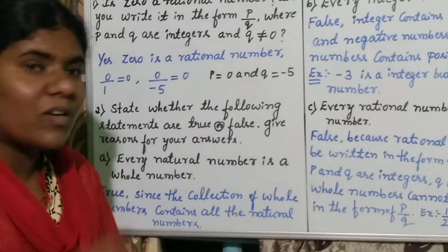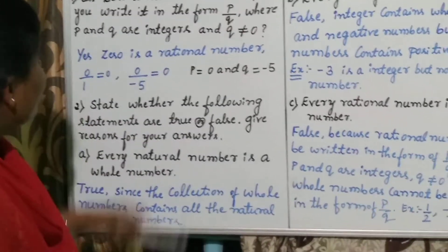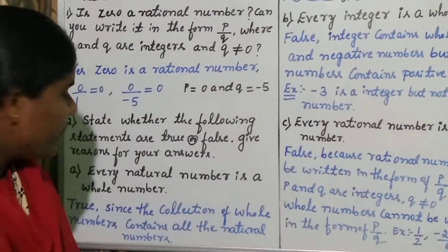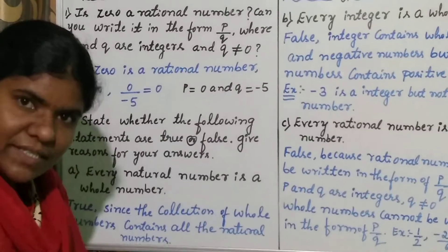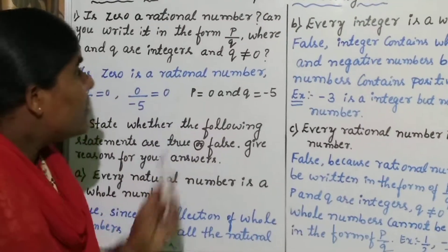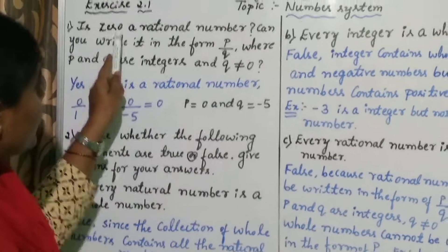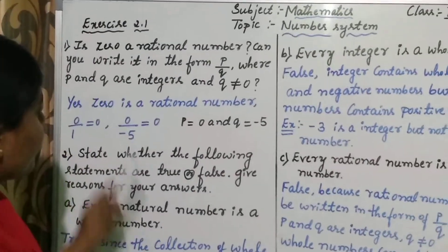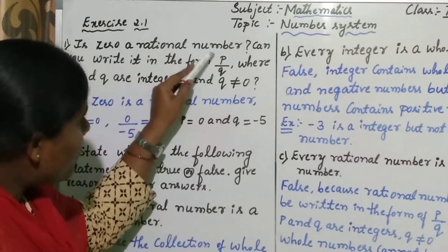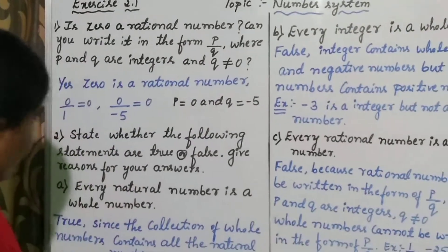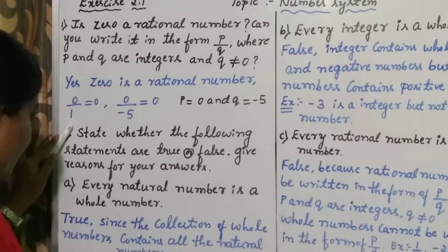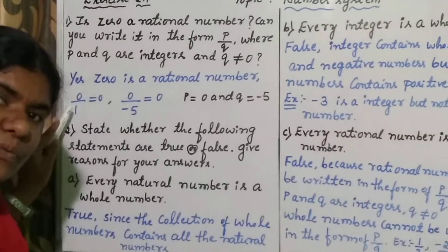You already know that concept and we are using that. Is 0 a rational number? Yes or no? If the answer is yes, 0 is a rational number. How to write this number in the form of P by Q? Here, one example I will consider: 0 by 1.